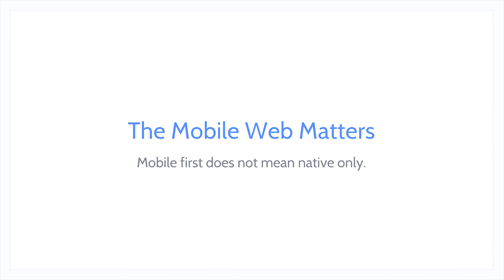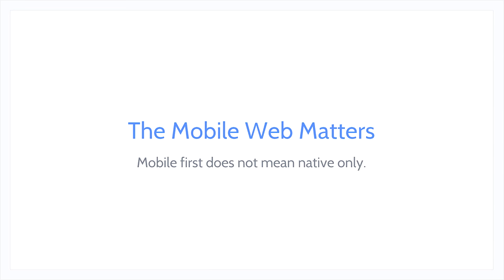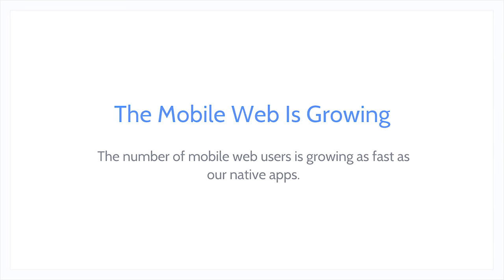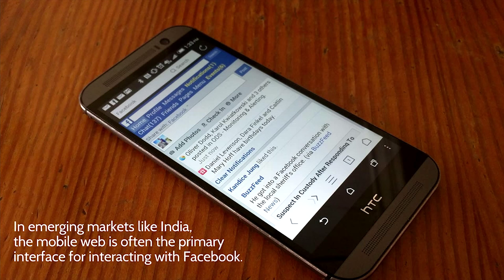Many people might think that investing in the mobile web takes away from native growth, or vice versa. But that's not what we see. The mobile web is growing at a similar rate to native — when native grows, mobile web grows too, and when people engage heavily with mobile web, that helps native just as much. This is especially true in emerging markets like India, where barriers to downloading an app are very high and the mobile web is often people's primary interface for interacting with Facebook.